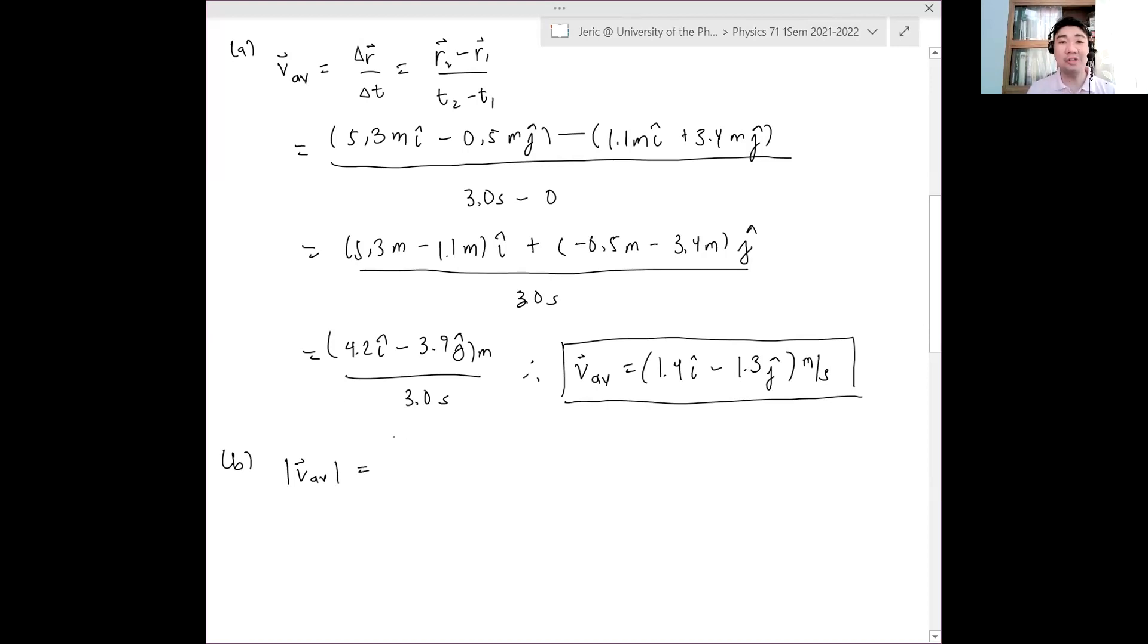Sorry. How do you calculate the magnitude of that average velocity? Pythagorean theorem. Yes, you use your Pythagorean theorem. So this is 1.4 meters quantity squared plus negative 1.3 meters quantity squared all in a square root. And you get something like 1.91 meters per second. So this is the magnitude of the average velocity.